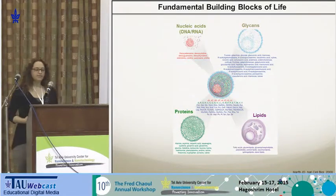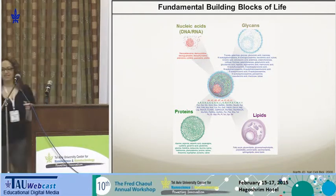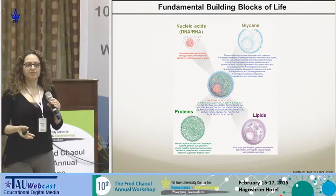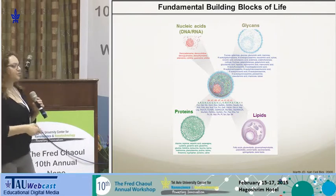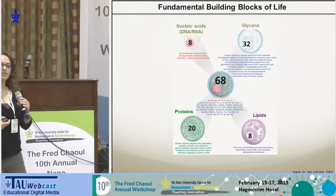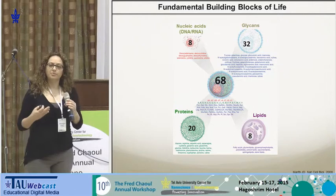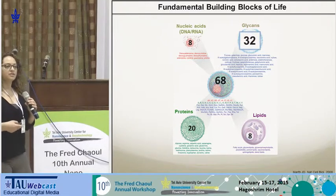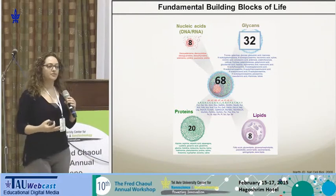When you think about what a cell is made of, there are four major types of building blocks. There are the DNA and RNA — nucleic acids — proteins, lipids, and also sugars, because you eat them all the time. If you think about the number of building blocks: there are only eight nucleic acids, 20 amino acids that build up proteins, only eight building blocks of lipids, and 32 building blocks of sugars in animal cells. Together, 68 building blocks — and sugars are, in fact, the largest group.